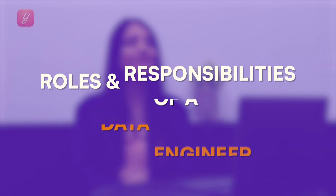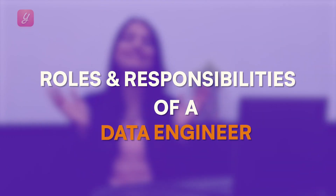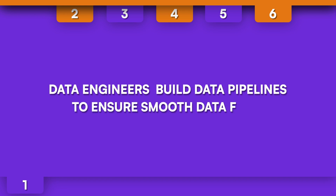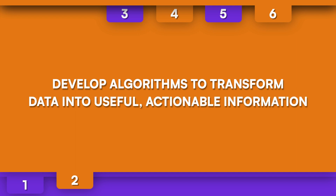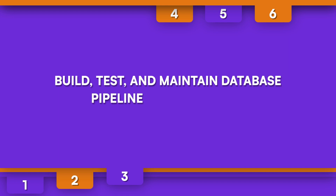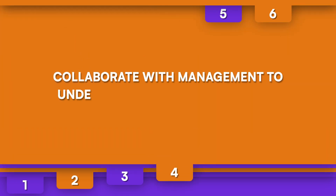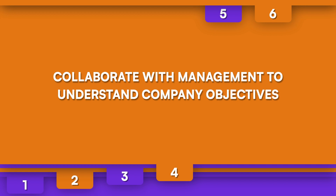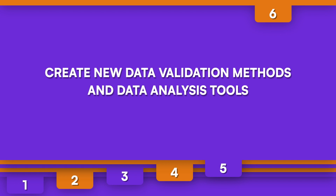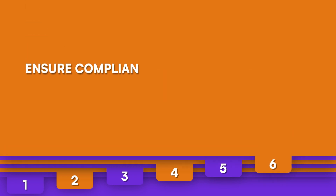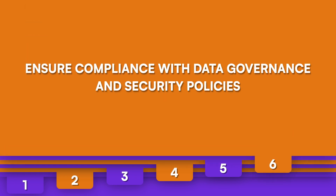Now let's look at the roles and responsibilities of a data engineer. Data engineers build data pipelines to ensure smooth data flow. They develop algorithms to transform data into useful, actionable information. They build, test, and maintain database pipeline architectures. They collaborate with management to understand company objectives, create new data validation methods and data analysis tools, and ensure compliance with data governance and security policies.